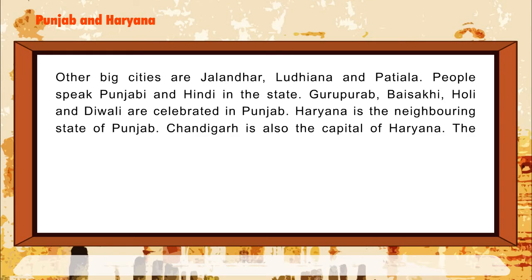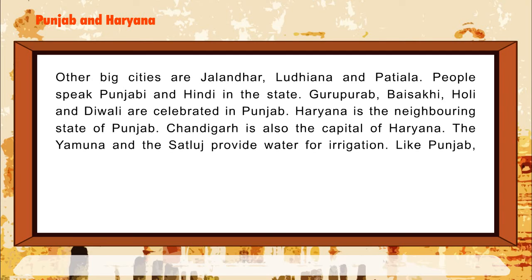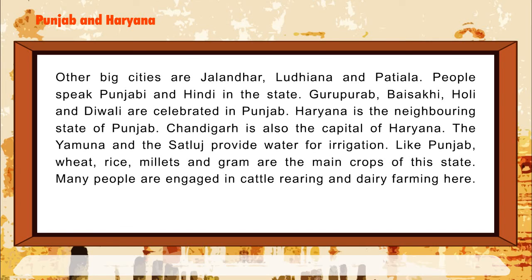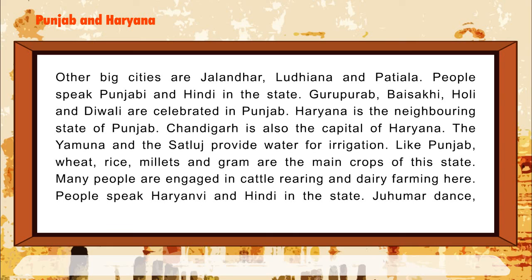Haryana is the neighboring state of Punjab. Chandigarh is also the capital of Haryana. The Yamuna and the Sutlej provide water for irrigation. Like Punjab, wheat, rice, millets, and gram are the main crops of the state. Many people are engaged in cattle rearing and dairy farming here. People speak Haryanvi and Hindi in the state.